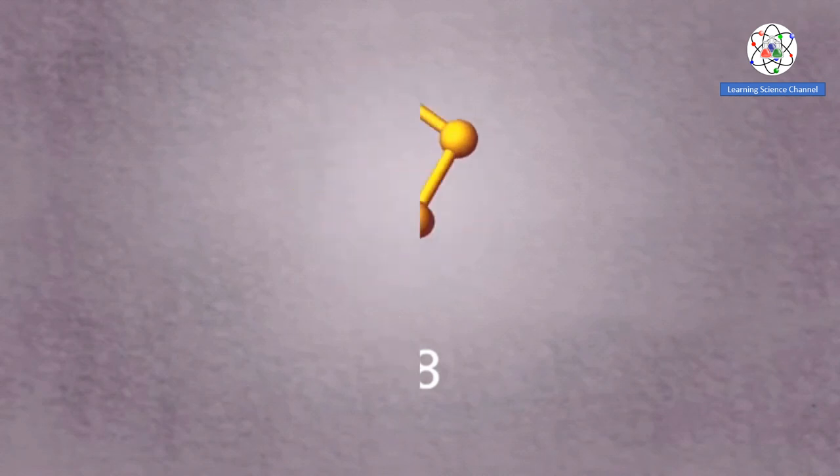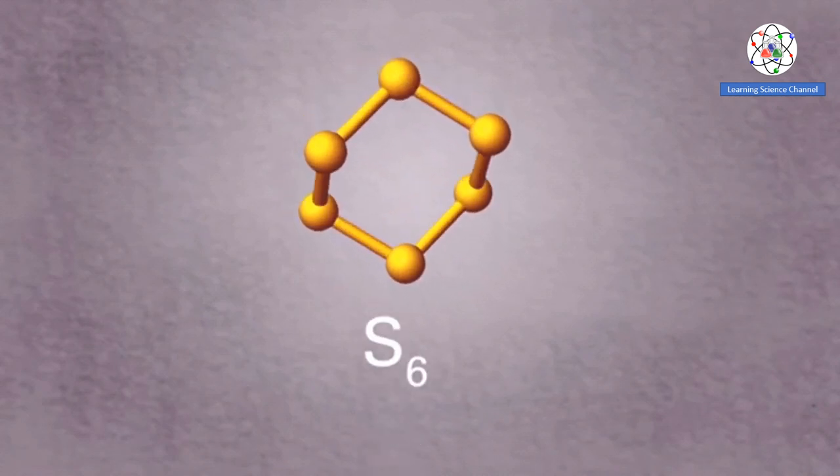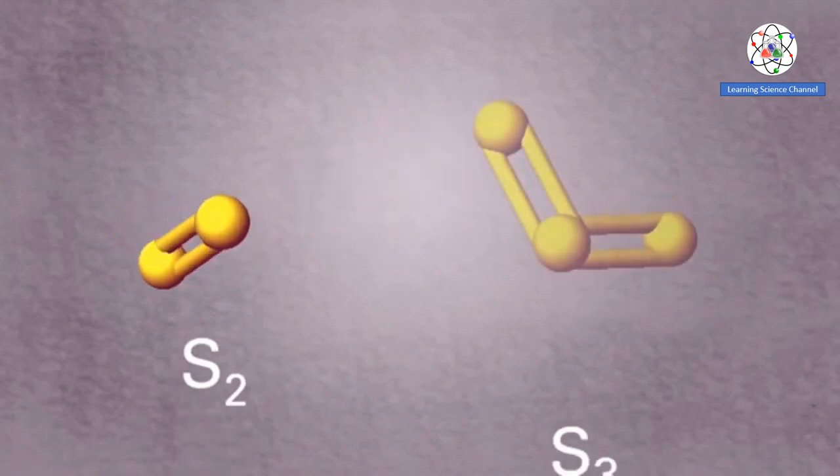Another solid allotrope of sulfur is hexasulfur, S6. Sulfur can also exist as a gas, disulfur and trisulfur.